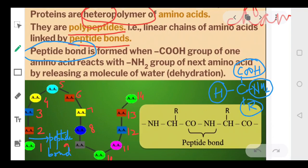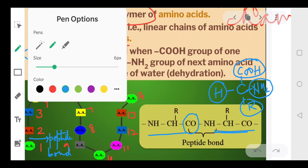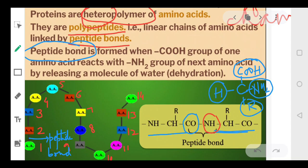Whenever two amino acids join with each other, the peptide bond is formed between the carboxyl group of the first amino acid and the amino group of the second amino acid. This bonding is called a peptide bond. So the bond formation is between the carboxylic group of the first amino acid and the amino group of the second amino acid.